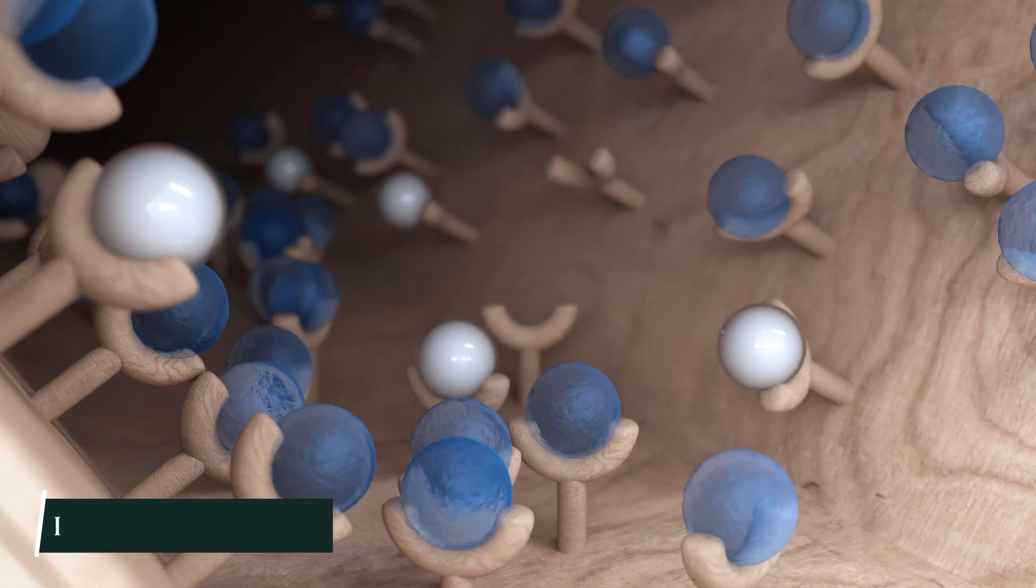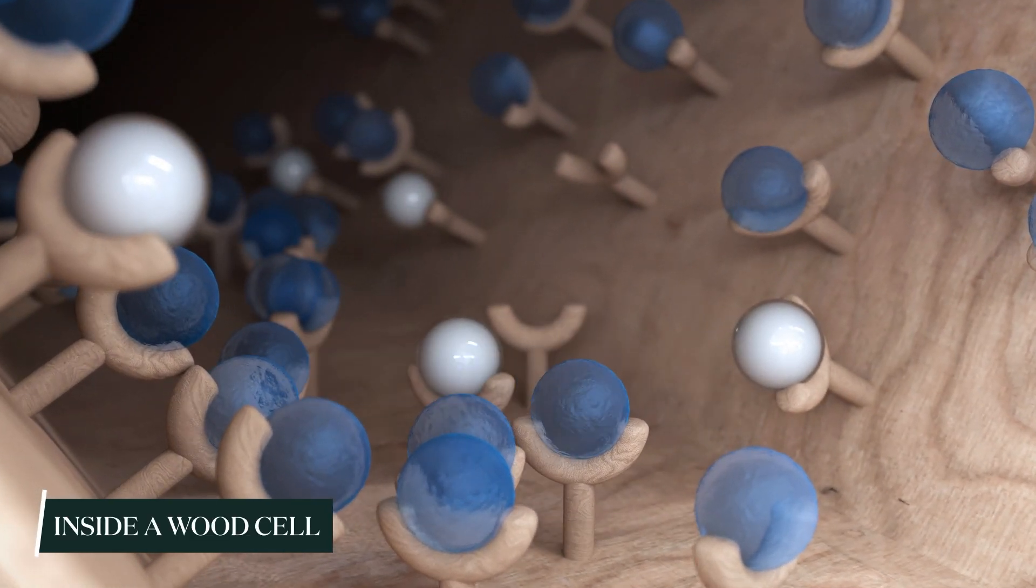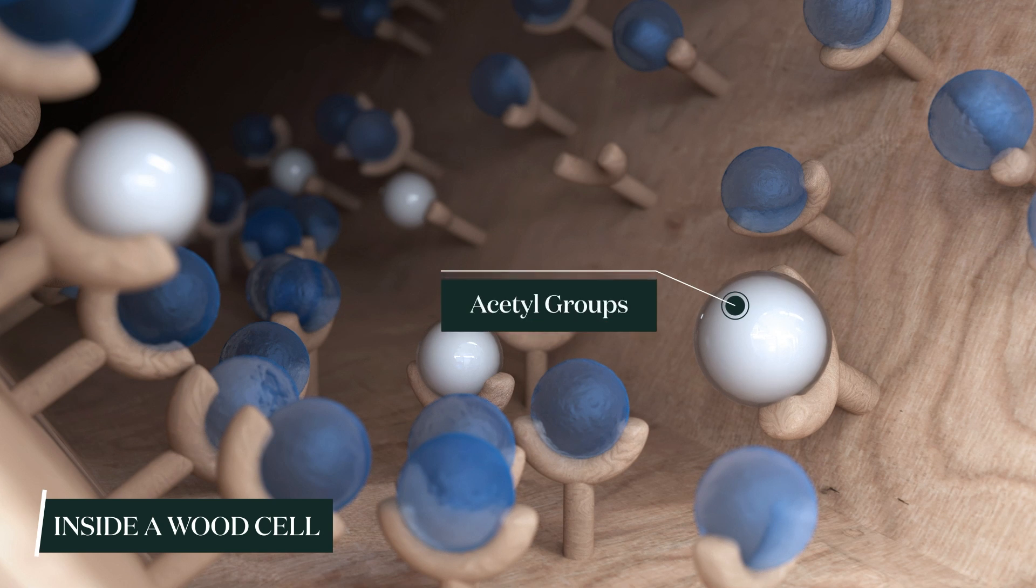Wood cells contain two types of groups: the abundant hydroxyl groups which absorb water, and the more scarce acetyl groups which naturally repel it.